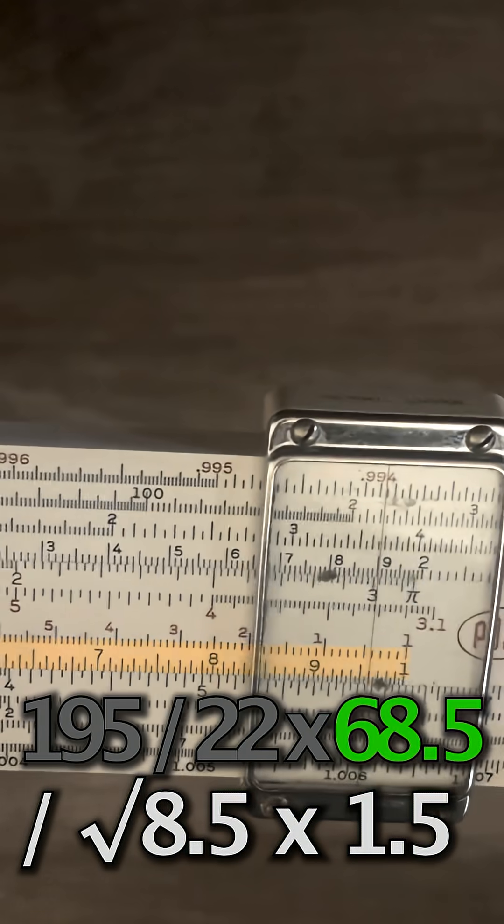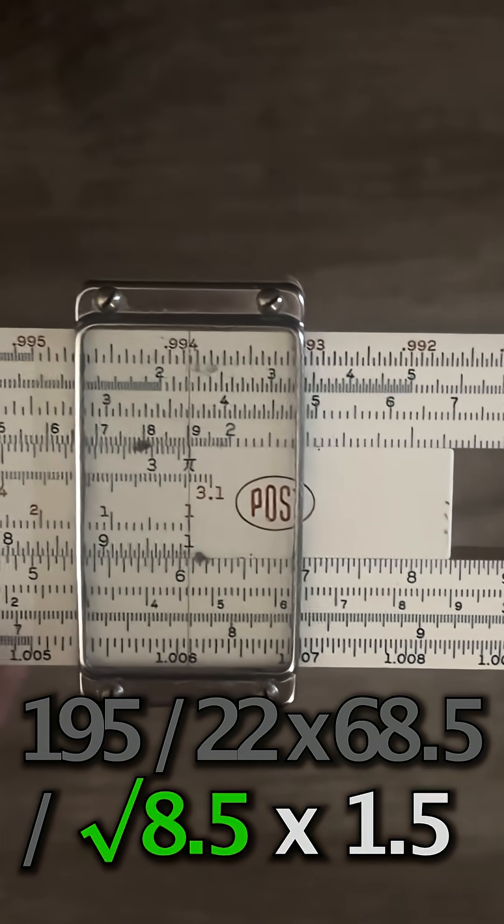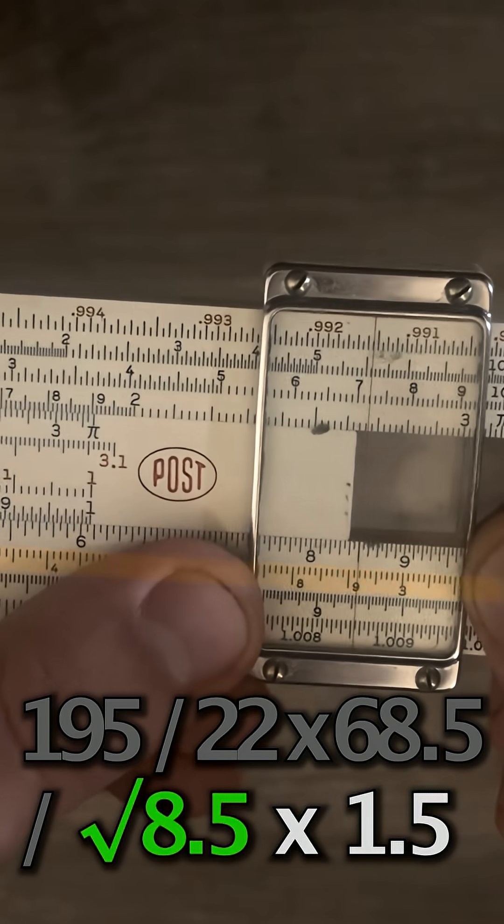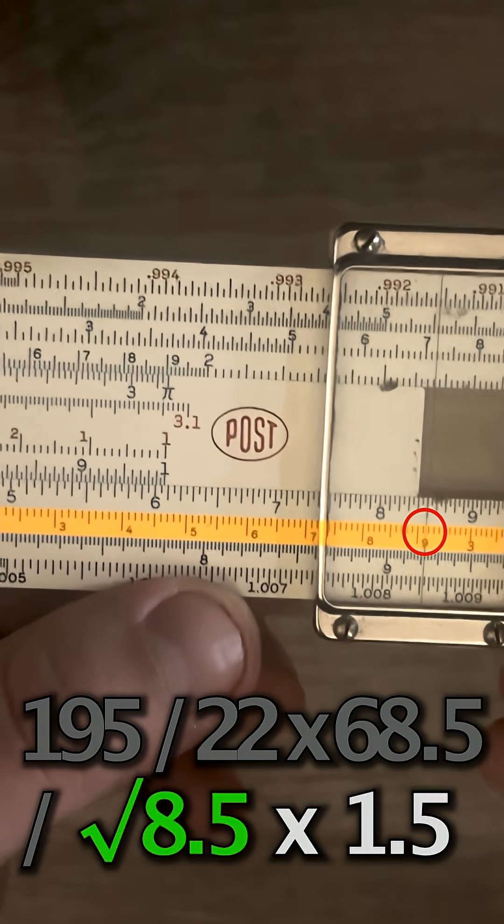And I'm going to move the hairline over just to hold our place because I want to find out the square root of 8.5 because that's our next number. So if I go to 8.5 on the d scale and I look down onto r1, that's going to be 2.915.